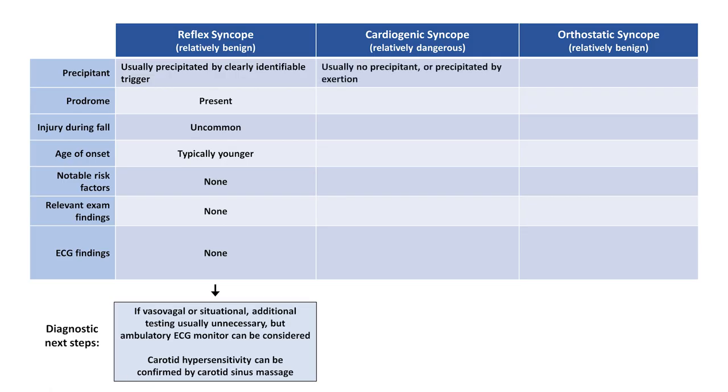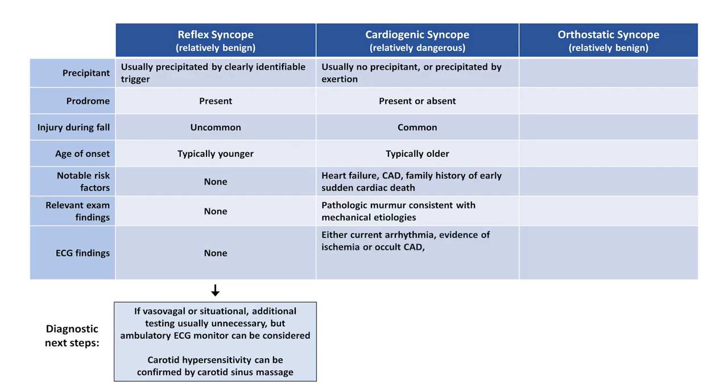Cardiogenic syncope usually has either no precipitant or is precipitated by exertion. A prodrome may either be present or absent. An injury during the fall is common, particularly during events not preceded by a prodrome. Patients affected by cardiogenic syncope tend to be older, and have risk factors such as heart failure and coronary artery disease. A family history of early sudden cardiac death suggests a hereditary condition such as hypertrophic cardiomyopathy or an ion channel defect. On exam, patients with mechanical etiologies of their cardiogenic syncope will often have a pathologic murmur. Possible ECG findings include a current arrhythmia, evidence of ischemia or occult CAD, or evidence of a proarrhythmia syndrome such as a long QT interval or delta waves.